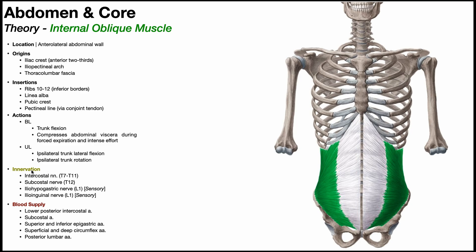The innervation of the internal oblique is also segmental. The motor contributions come from the intercostal and subcostal nerves, with nerve root contributions T7 to T11 and T12 respectively. Like the external oblique, there's sensory innervation to the muscle belly, but this time provided by two nerves from the lumbar plexus: the iliohypogastric nerve and ilioinguinal nerve, both with nerve root L1. The blood supply is extensive: the lower posterior intercostal artery, subcostal artery, superior and inferior epigastric arteries, superficial and deep circumflex arteries, and the posterior lumbar arteries.